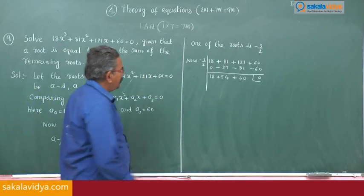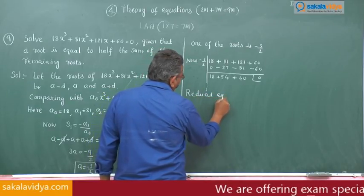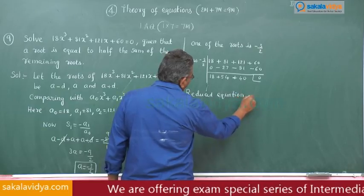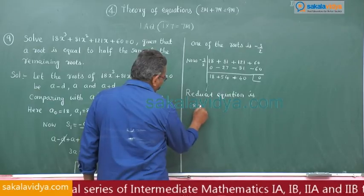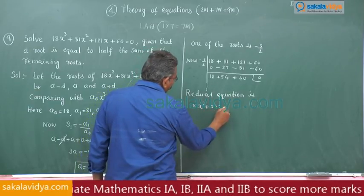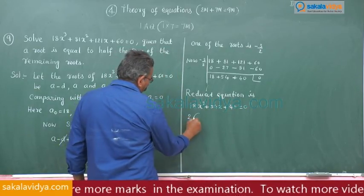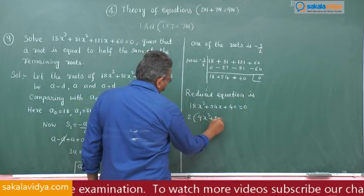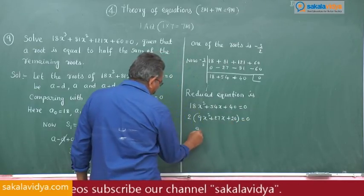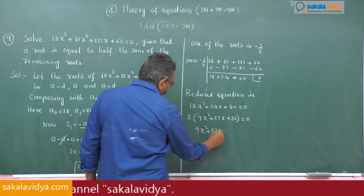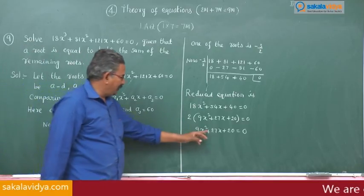The reduced equation is 18x² + 54x + 40 = 0. Dividing by 2 gives 9x² + 27x + 20 = 0. Now solve 9x² + 27x + 20 = 0, where the product is 9 × 20 = 180.